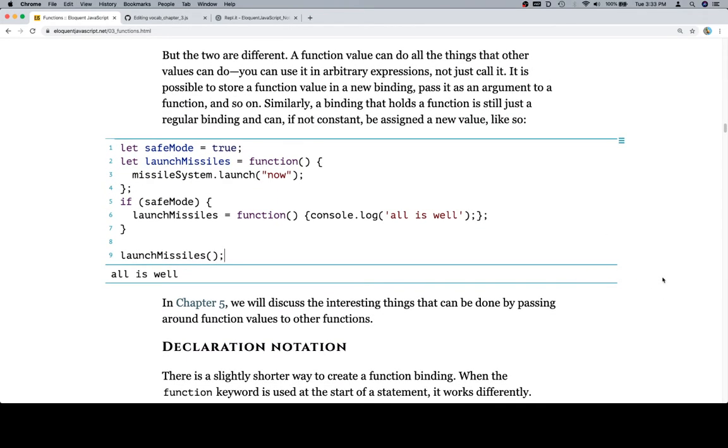In chapter five, we will discuss the interesting things that can be done by passing around function values to other functions. And by interesting, they mean mind-meltingly difficult to understand the first time that you see it. Those are higher-order functions.